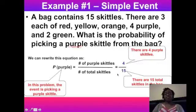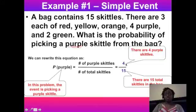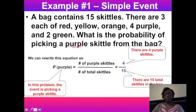So a 4 out of 15 chance means if we pulled a Skittle from the bag 15 times, theoretically we would get a purple Skittle four times. Notice this is a ratio or fraction — remember to simplify fractions. This one can't be simplified, so it's already in simplest form.